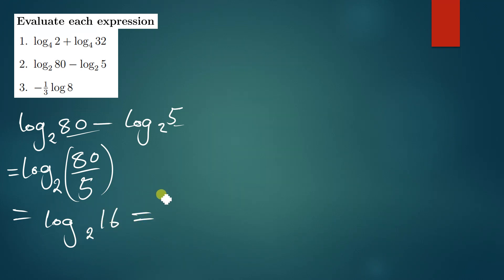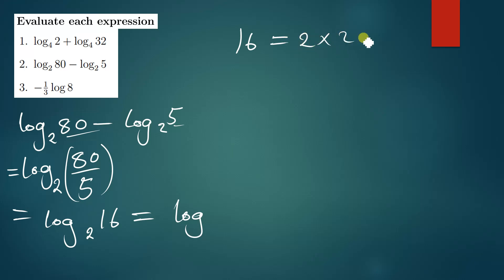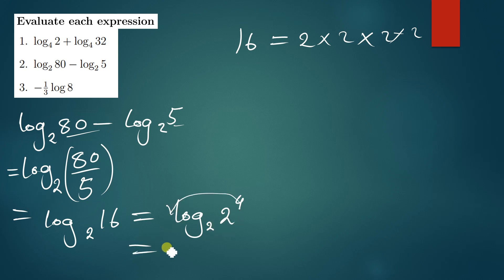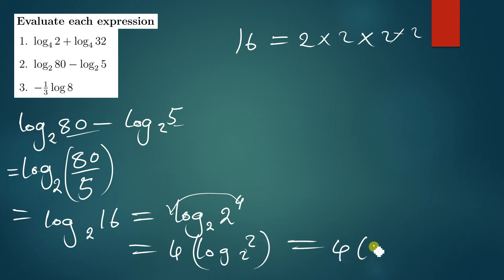80 divided by 5 gives us 16, so we have log 16 base 2. Now 16 = 2×2×2×2 = 2⁴. So this is log(2⁴) base 2, and the 4 drops down: 4·log 2 base 2. Since the function and base are the same, log 2 base 2 = 1, so we get 4×1 = 4.